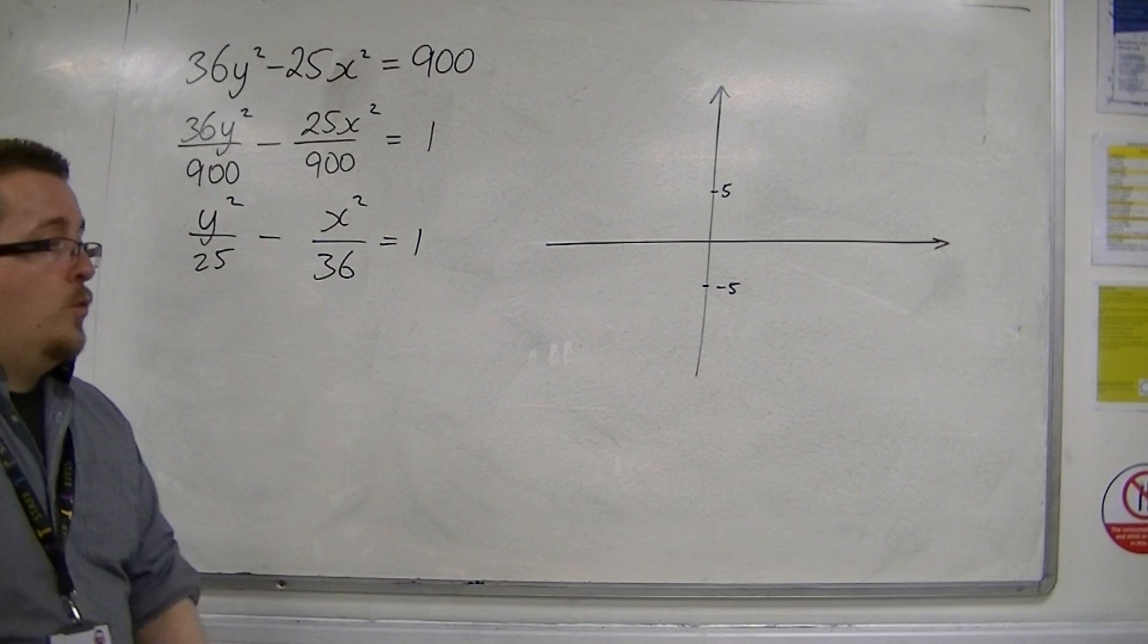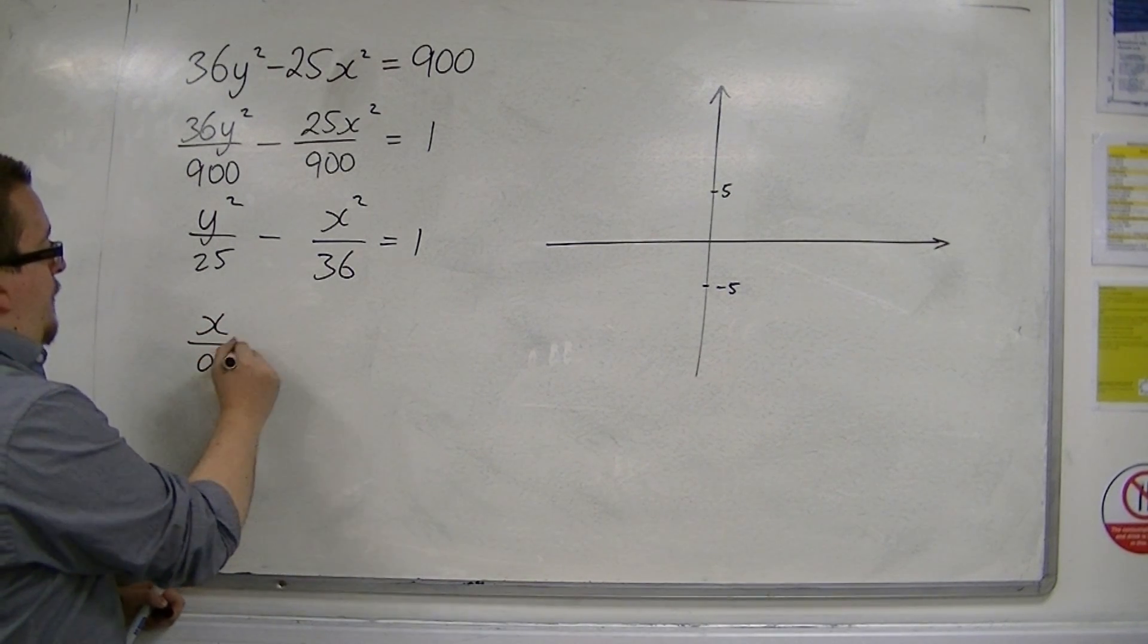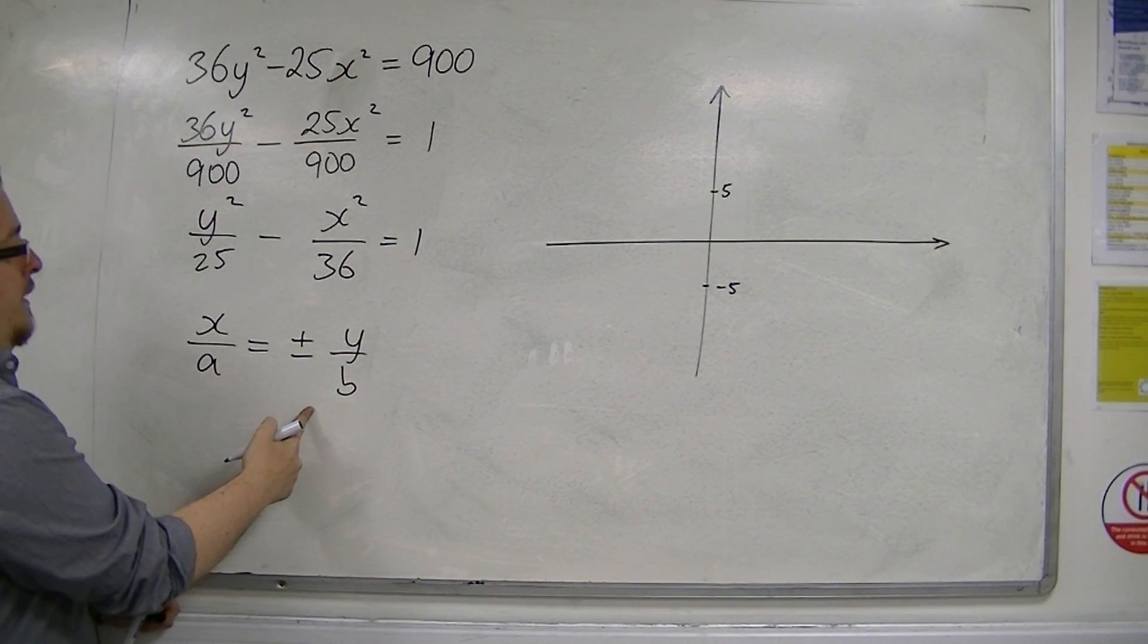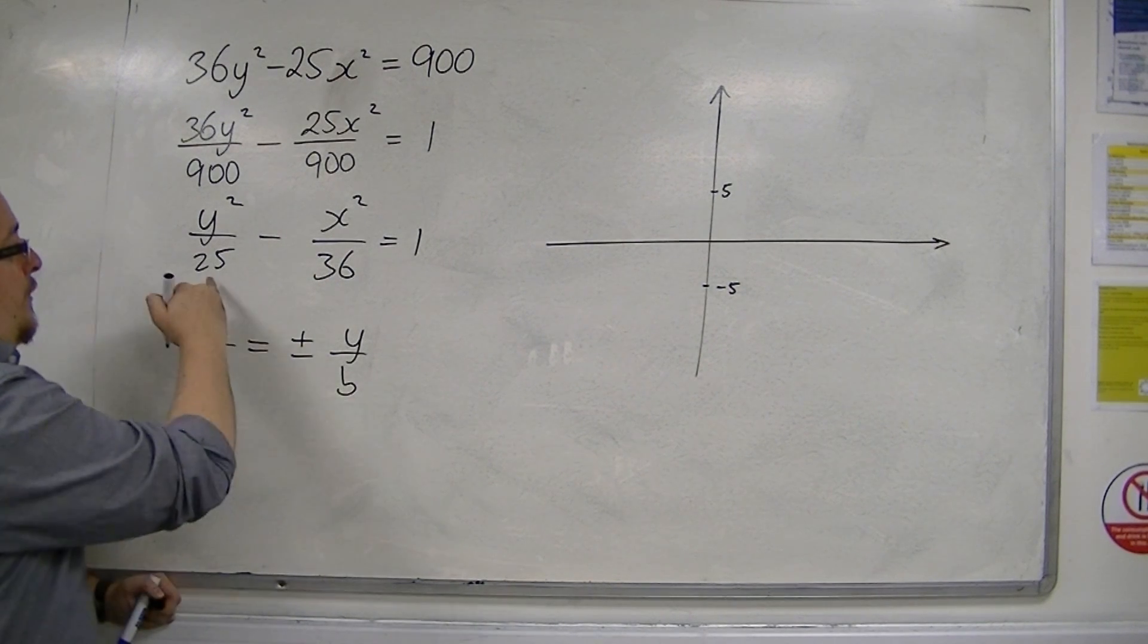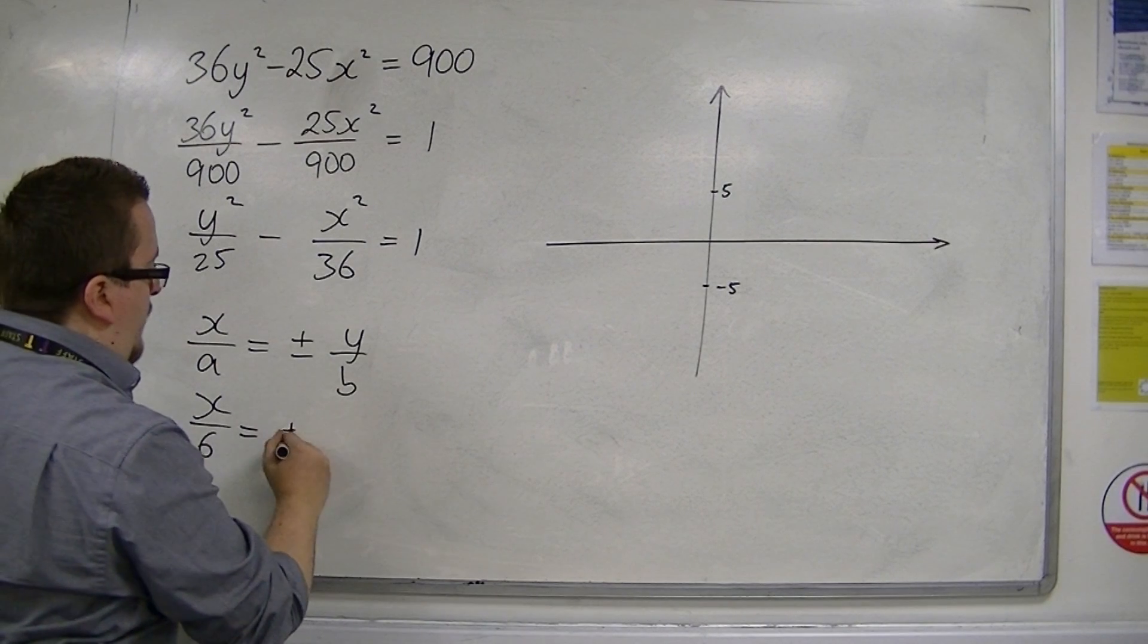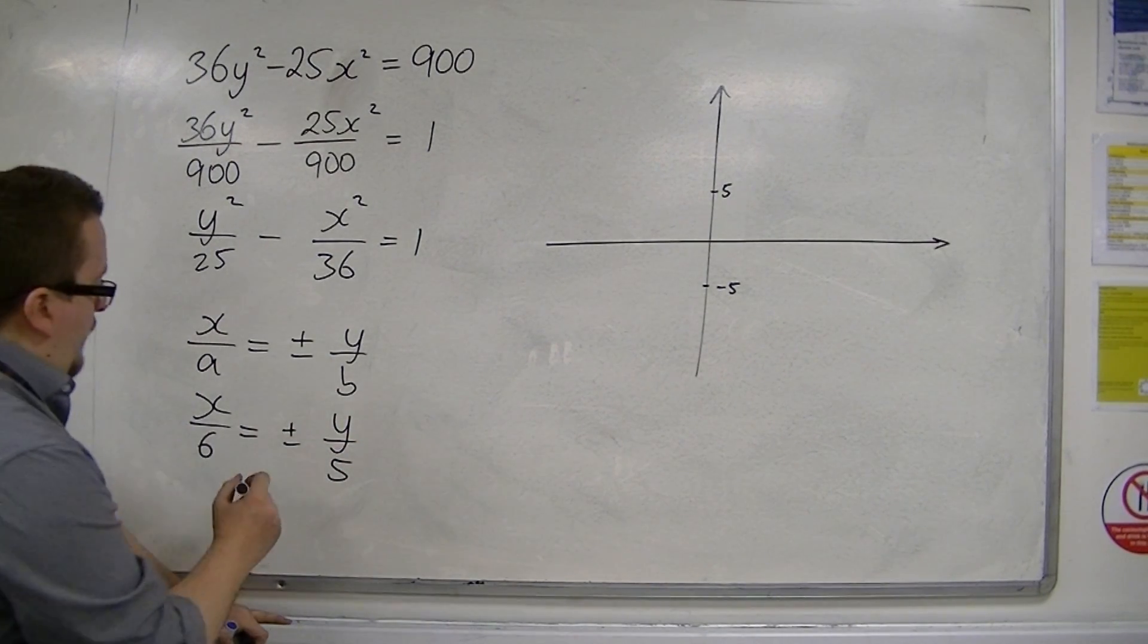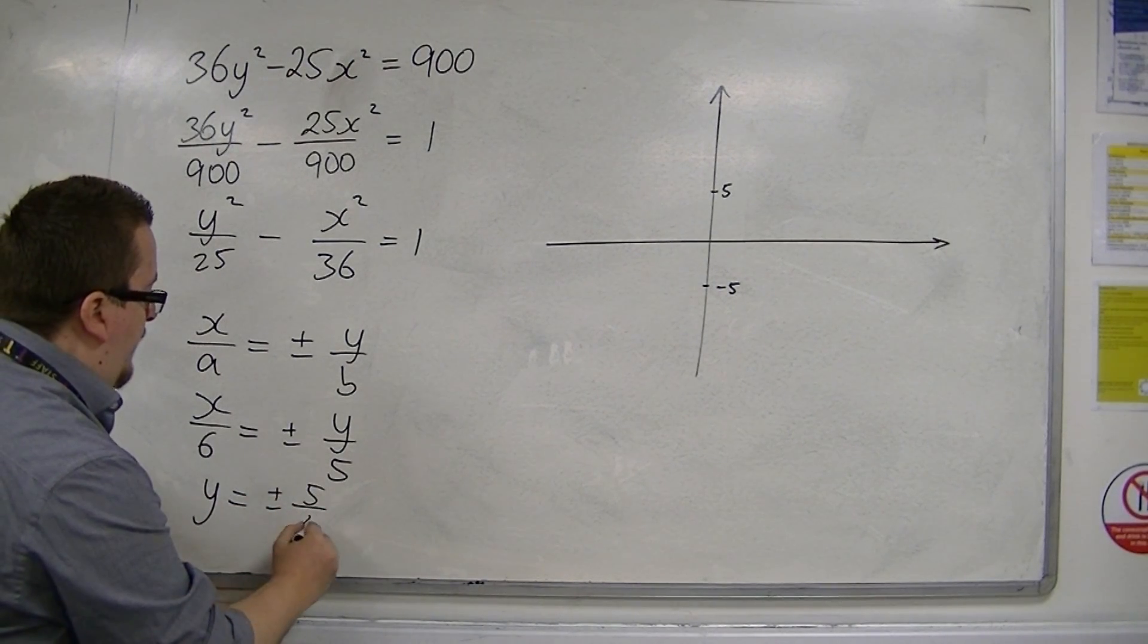Now I also want to find the equations of the asymptotes. That's coming from the formula x over a equals plus or minus y over b. That's the one in the formula booklet. Now a is 6 and b is 5, so x over 6 equals plus or minus y over 5. So that means y equals plus or minus 5 sixths x.